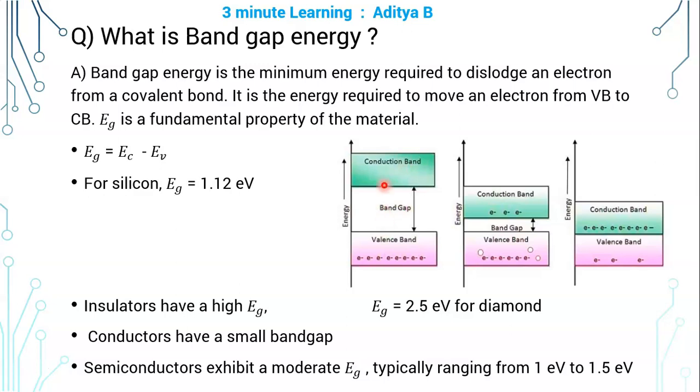If you see an insulator, they have a very high band gap energy. For example, diamond has 2.5 electron volts EG. So this first figure is for insulators like diamond.